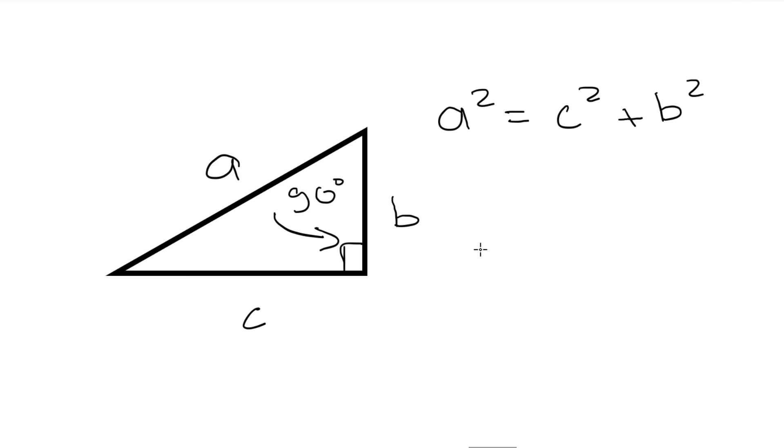And from here we can rearrange that A is equal to, take a square root of both sides, square root of C squared plus B squared. Now let's go back to our problem.